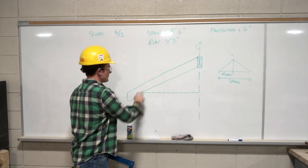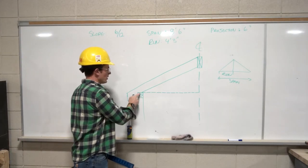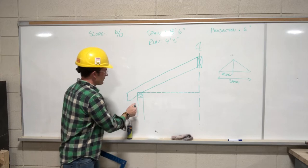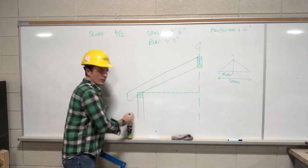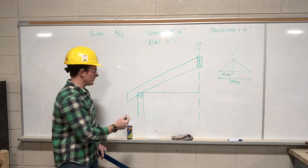So here's our rafter, and this is our exterior wall, double top plate. This line right here, we refer to as the building line. It's the outside of framing.